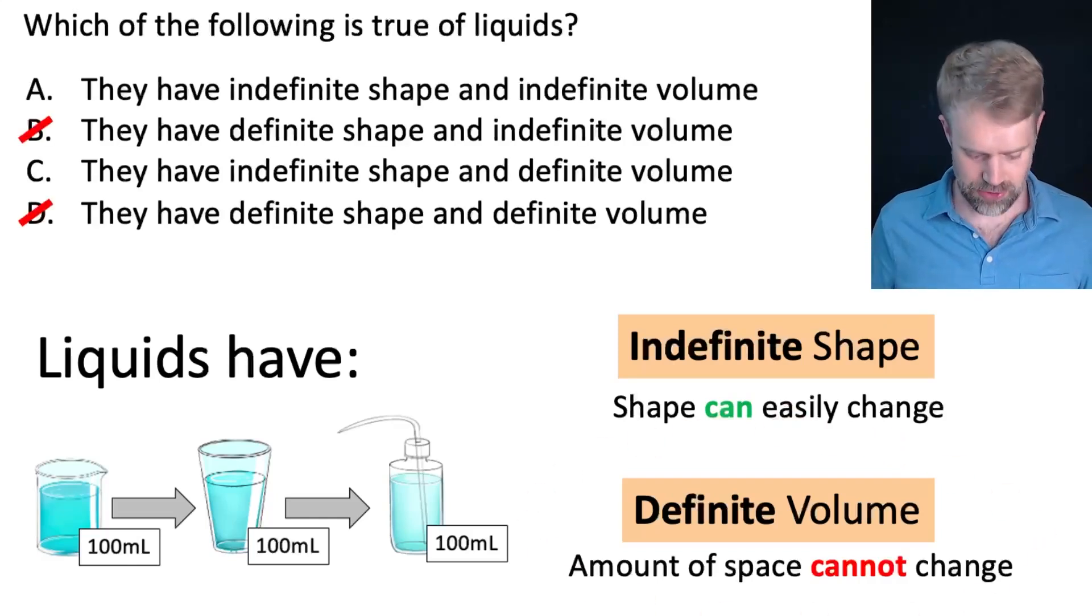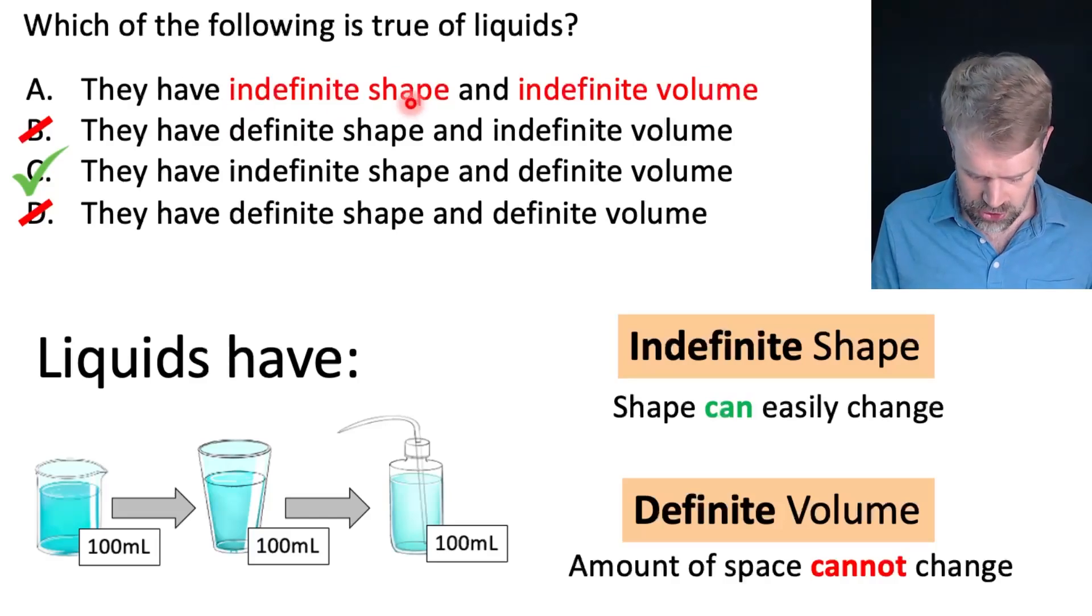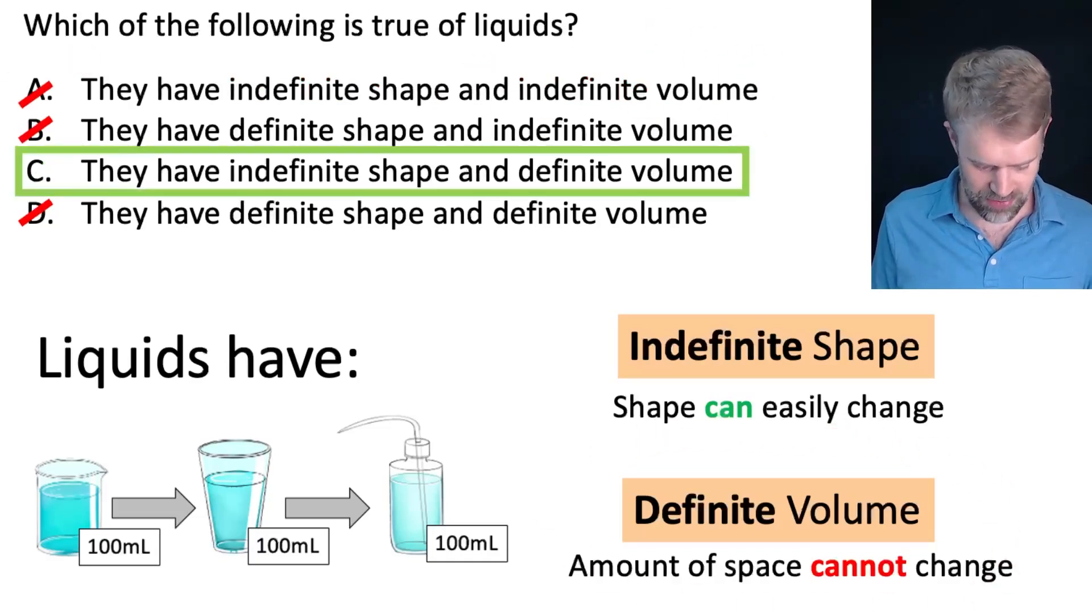Let's look back at the answer choices we already eliminated, B and D. Take a look at C. Indefinite shape and definite volume. Looks right to me. And if you wanted to be extra careful, choice A has indefinite shape and indefinite volume. We know that's wrong. Indefinite volume, cross it off because we know that liquids have definite volume. Get rid of A and choice C it is.